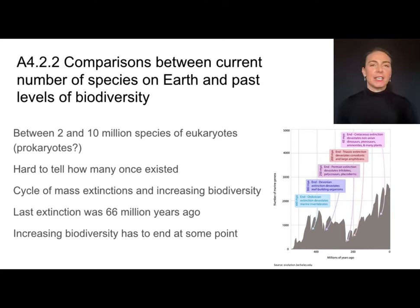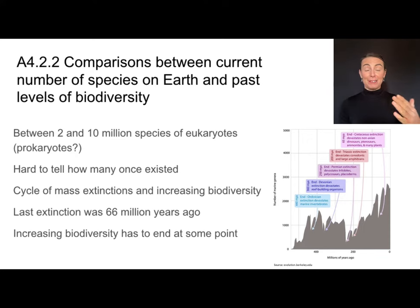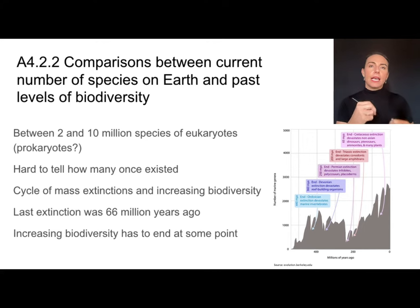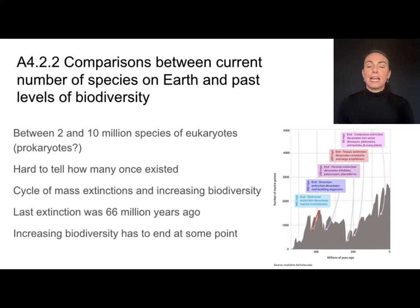It's also hard to tell how many species once existed — counting current species is hard enough, and extinct species are even harder to estimate. But through fossil records, we can see cycles of increasing biodiversity throughout time followed by mass extinctions. New species form, then extinction. That cycle has continued throughout Earth's history.